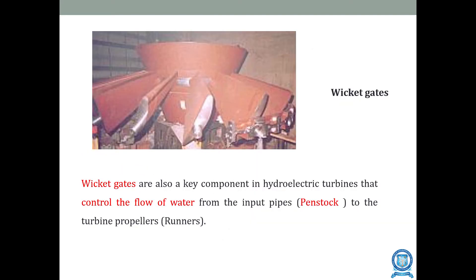Wicket gates are a key component in hydroelectric turbines. Their main purpose is to control the flow of water from the input pipes — called the penstock — to the turbine propellers or runners. They control the amount of water flowing from the penstock to the turbine runners.